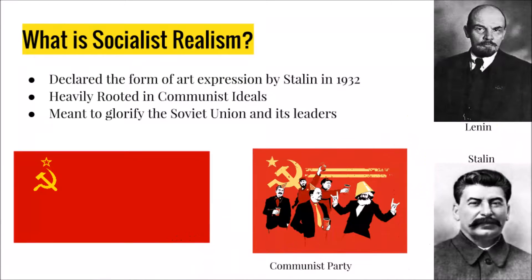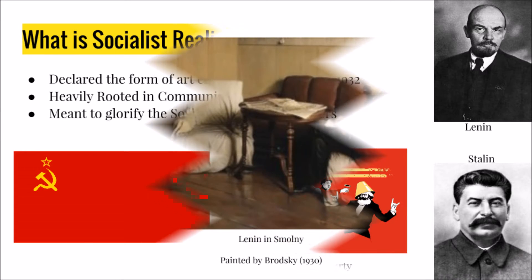Socialist Realism was declared the official form of art expression of the Soviet Union by Stalin in 1932. It was heavily rooted in communist ideals, and its basic purpose was to glorify Soviet leaders and the Bolshevik party. It was also used to spread propaganda that supported the party and frowned upon its enemies to the west. Even though it was officially declared the mandatory form of art expression by Stalin, it had been practiced as soon as Russia transitioned from a monarchy to a communist nation. In fact, Lenin had personally rewrote sections of a play by one of his favorite playwrights to make it more agreeable to communist ideals.